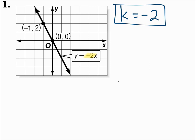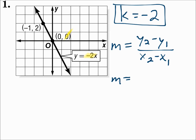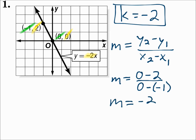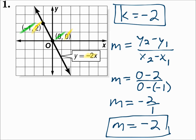Now let's find the slope of the line using the slope formula. Using (0, 0) as the second point: y2 is 0, minus y1 is 2, over x2 is 0, minus x1 is negative 1. When you work that out, m equals negative 2, which is the same as k. The slope of a direct variation equation will always be the same as k.